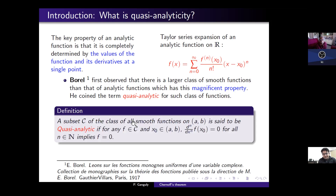Let us formally define this class. A subset of a class of smooth functions is said to be quasi-analytic if for any member of that class, all the derivatives vanishing at a single point implies f is zero. This is the definition of a quasi-analytic class of functions.